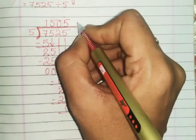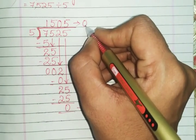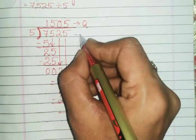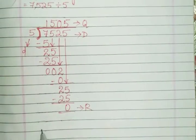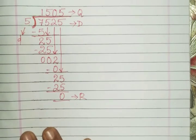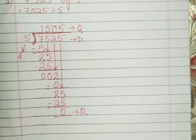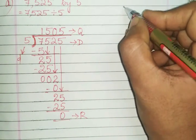Now that means your remainder is 0—you are left with nothing, and so this number is exactly divided. Right. Now what you can write for checking—you can go for checking after every division. Now I'll teach you how to check.